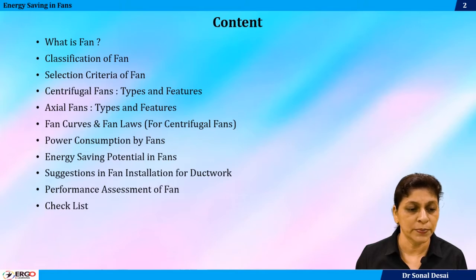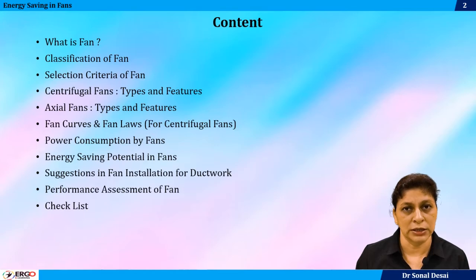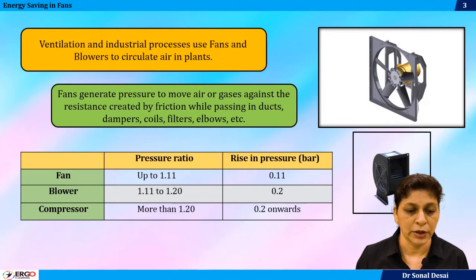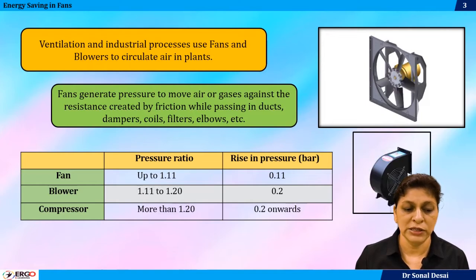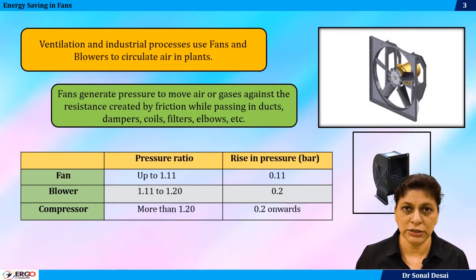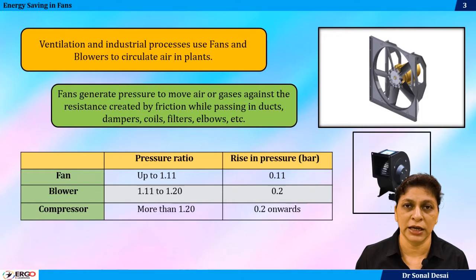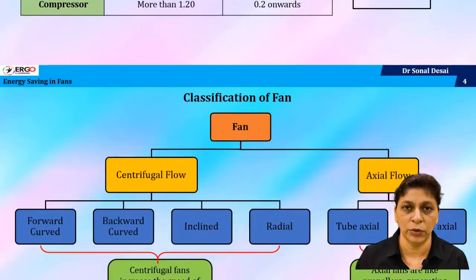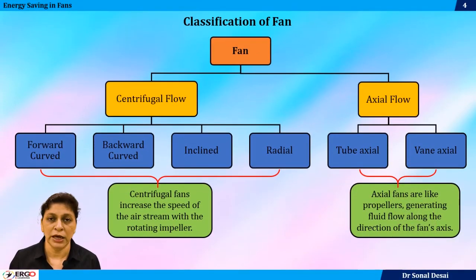When a fan is producing a pressure which is less than a blower and compressor, we call it a fan. So we will see what are the pressure ranges when we classify it as either a fan, blower, or compressor.